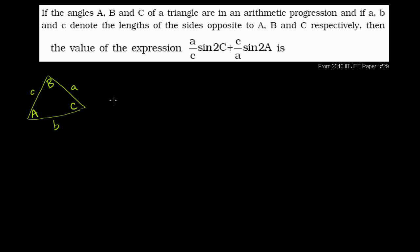Now the first piece of information they tell us is that the angles A, B, and C of the triangle are in an arithmetic progression. All an arithmetic progression is, is a series of numbers separated by the same amount. For example: 1, 2, 3 — arithmetic progression. 2, 4, 6 — arithmetic progression, separated by 2 every time. 10, 20, 30 — also an arithmetic progression.